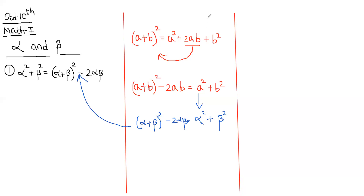This is not anything new we are studying. This is the same identity based on (a+b)², (a-b)², a³+b³, a³-b³, (a+b)³, (a-b)³. The only thing is we have modified it: in place of a we write alpha and in place of b we write beta.